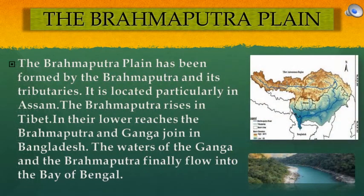The Brahmaputra plain has been formed by the Brahmaputra and its tributaries. It is located particularly in Assam. The Brahmaputra rises in Tibet. In their lower reaches, the Brahmaputra and Ganga join in Bangladesh. The waters of the Ganga and the Brahmaputra finally flow into the Bay of Bengal.